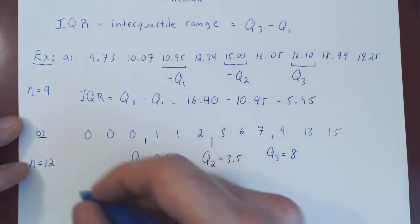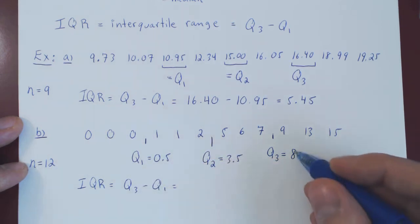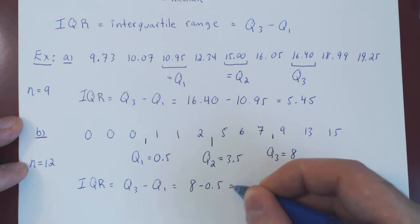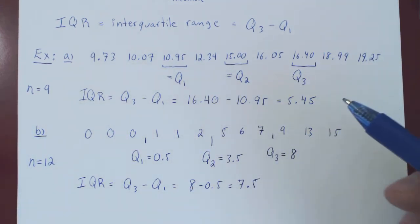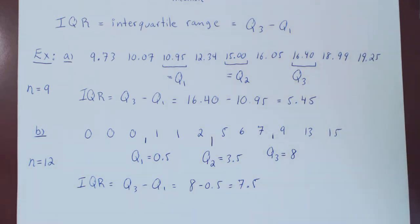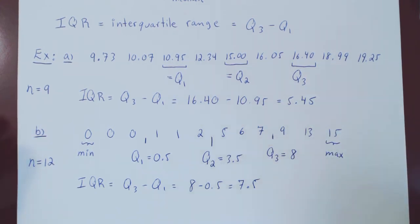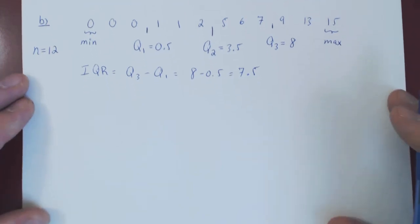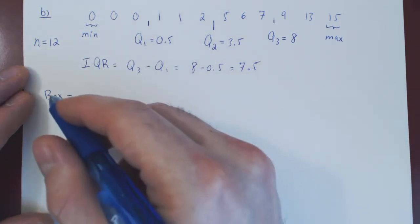And that's the key difference: if the median Q2 is an element of the set, you include it when calculating Q1 and Q3; if it is not, you ignore it. In this case the interquartile range is Q3 minus Q1 = 8 minus 0.5 = 7.5. Now you can use quartiles together with the minimum and maximum value to represent your data graphically using a box and whisker plot.